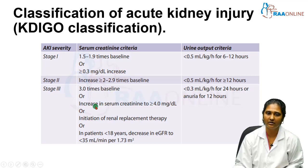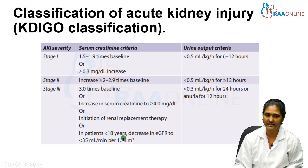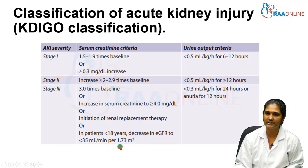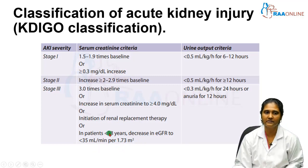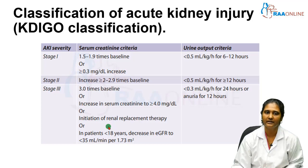Stage 3 severity is defined as serum creatinine rising to three times the baseline, or greater than or equal to 4 mg/dL at any point. Initiation of renal replacement therapy also qualifies as Stage 3, even if creatinine is only 1.5 times baseline. In patients under 18 years, an estimated GFR of less than 35 mL per 1.73 m² body surface area also meets Stage 3 criteria. This KDIGO classification helps guide timely intervention for improved outcomes.